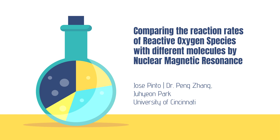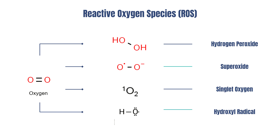What is a reactive oxygen species? ROS refers to a group of highly reactive oxygen-based species derived from molecular oxygen, pictured on the left. The ROSs are pictured in the middle, and we'll be looking at superoxide and singlet oxygen within this study.